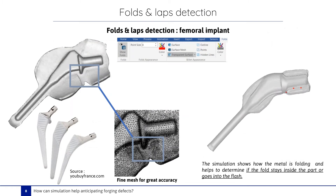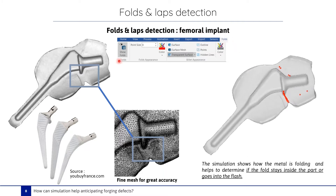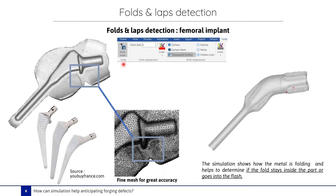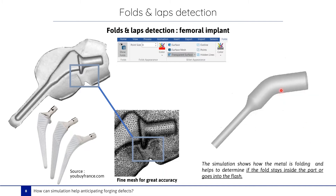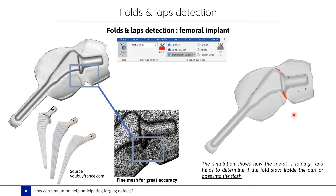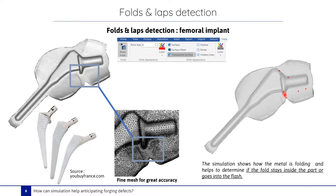Here is an example of folds and lapse detection in a femoral implant forging case. To use the point tracking, we go to faults and click on show faults. This allows visualization of the faults in the graphical view. Points in red indicate where the material enters in contact with itself. When we have a high concentration of points, we can detect the occurrence of the fault. We can see that the fault moves to the flash of the part.